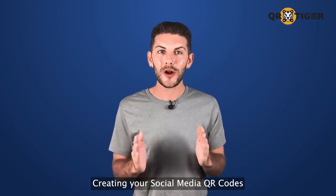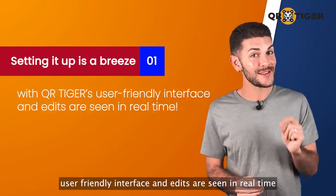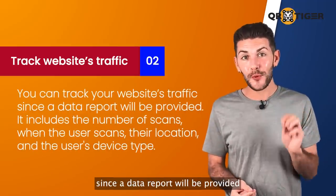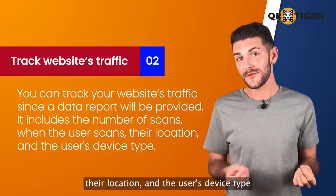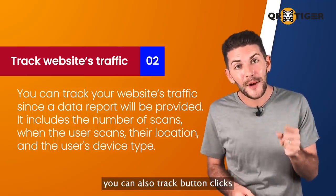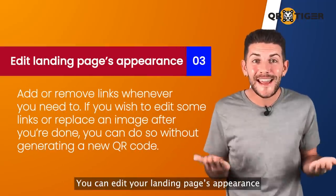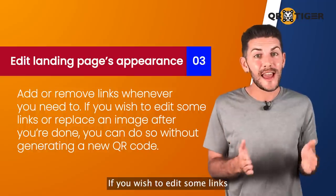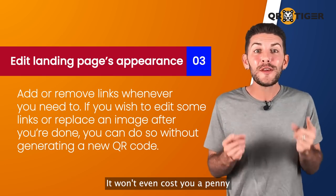Creating your social media QR codes on QR Tiger comes with a lot of perks. First, setting it up is a breeze with QR Tiger's user-friendly interface and real-time edits. Second, you can track your website's traffic since a data report will be provided, including the number of scans, when the user scans, their location, and the user's device type. You can also track button clicks and see how many people visited each of your social media pages. Third, you can edit your landing page's appearance and add or remove links whenever you need to, without generating a new QR code — and it won't cost you a penny.